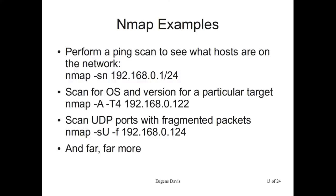A few Nmap examples: to perform a ping scan for an entire network, use 'nmap -sn' followed by the network IP — the -s is for scanning and -n means ping. For OS detection on a particular target, use 'nmap -A -T4' followed by the target IP — -A detects the OS and version, and -T4 makes it go a bit faster. For scanning UDP ports using fragmented packets, use 'nmap -sU -F' followed by the target — -sU scans UDP and -F means fragment.